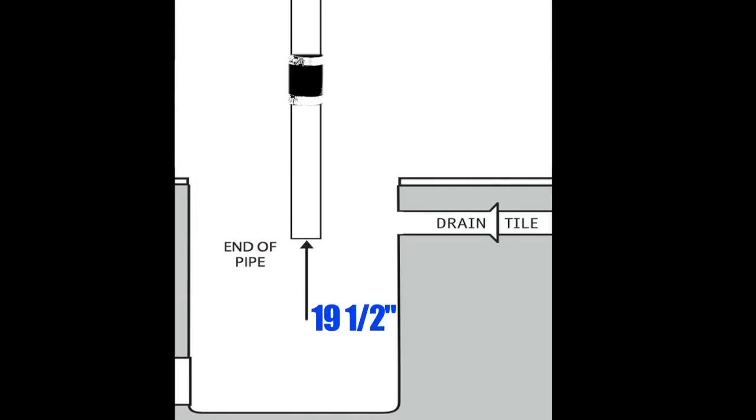Extend the discharge pipe so it ends 19 and a half inches from the bottom of the sump pit. Once this step is completed, it takes less than 5 minutes to finish the installation.